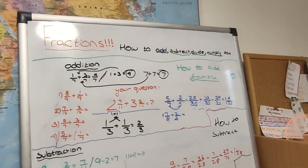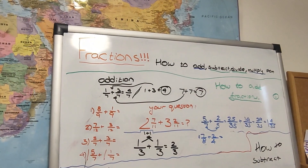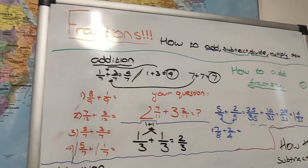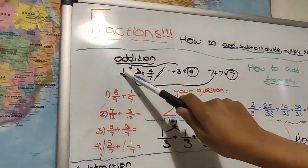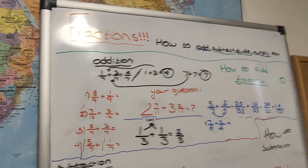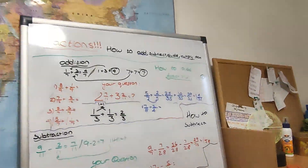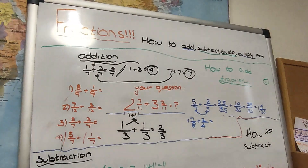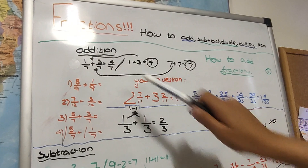So first is fractions — how to add, subtract, divide and multiply them. First we'll go into adding fractions. As you can see, here's a simple diagram. You can do 1/7 add 3/7 equal to 4/7. The denominator does not change. So whenever you're adding, make sure the denominator stays the same.